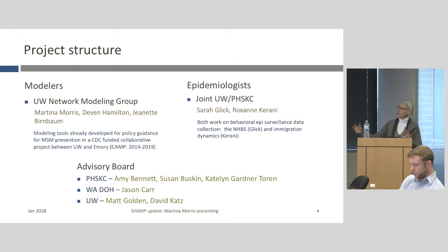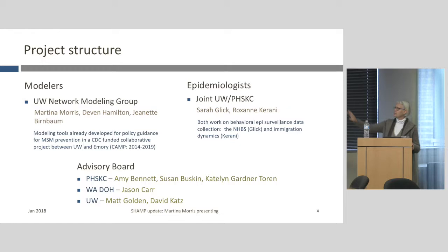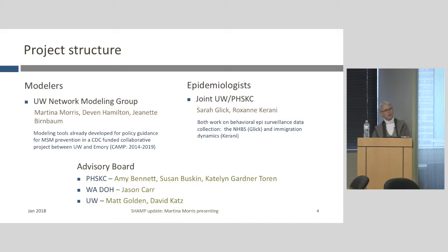We're turning to epidemiologists to inform us about data — people typically on the boundary of the University of Washington and Public Health Seattle King County. Sarah Glick and Roxanne Karani are the two key people in that role. Both work on behavioral epidemiological surveillance data collection. Sarah Glick is the PI for the local NHBS — the HIV Behavioral Surveillance. Roxanne Karani has done remarkable work looking at immigration dynamics and managed to include a set of questions into the standard surveillance protocol here in Public Health Seattle King County, giving us unique local data on immigration dynamics.